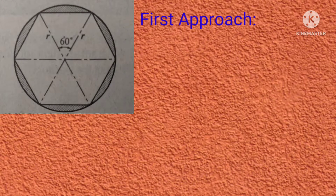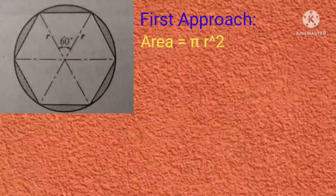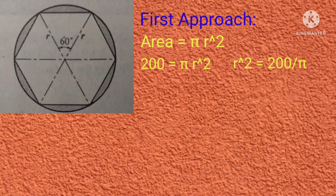Let's try the first approach. We will solve the area of one of the triangles inside the hexagon, then multiply it by 6 to get the area of the hexagon. Since the area of the circle is given as 200 square meters, we can compute the radius, which is also the side of the triangle. The formula for the area of a circle is π r². Solving: 200 = π r², so r² = 200 ÷ π, giving r = √(200/π) = 7.98 meters.